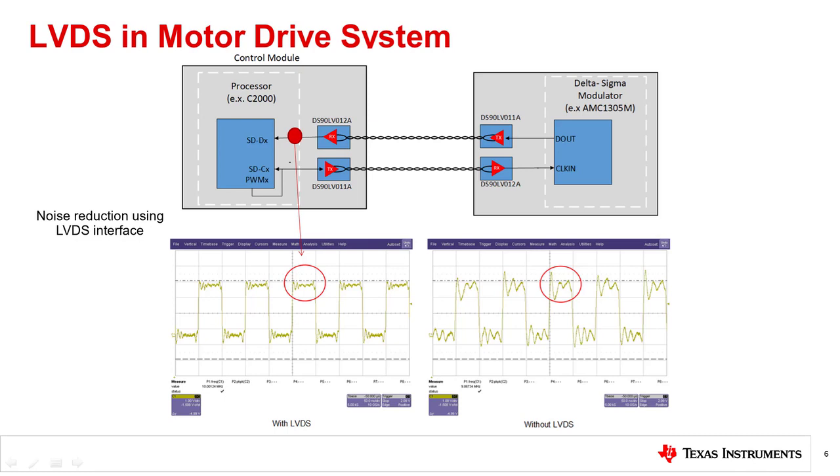With the LVDS implementation, there's a 600 millivolt improvement in noise in output of ADC modulator AMC 1305. This significant noise reduction helps with the overall signal integrity.